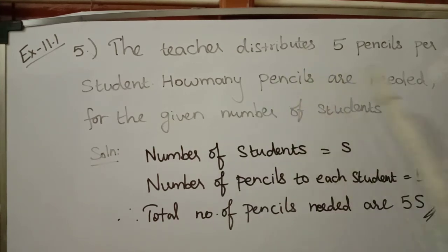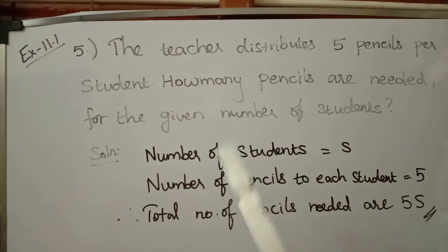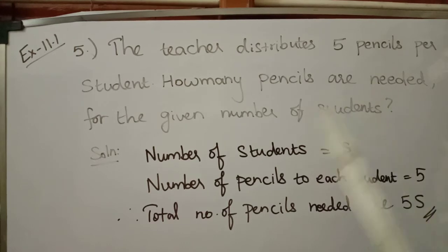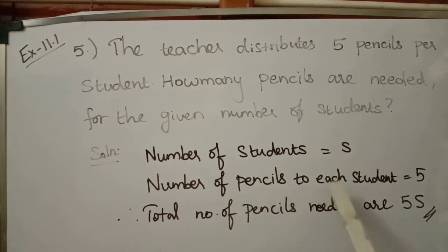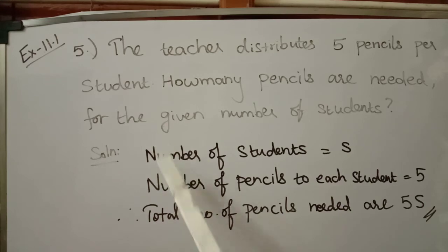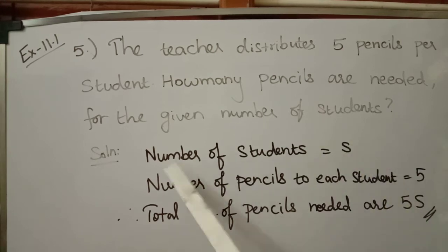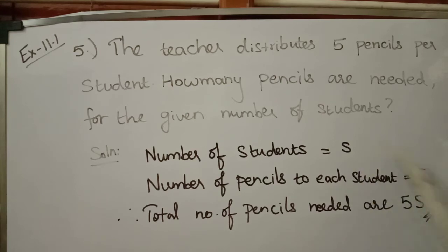First, let the number of students be 's'. We don't know how many students there are, so we choose 's' as a variable. The number of pencils needed for each student is equal to five — this is given in the question. Therefore, the total number of pencils needed for the students is equal to five into s, that is 5s.